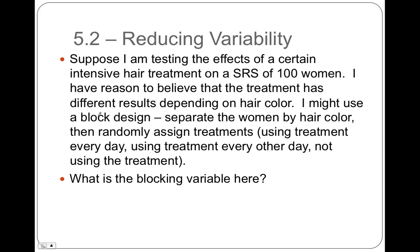Suppose we're testing the effects of a certain intensive hair treatment on a simple random sample of 100 women, and we have reason to believe the treatment has different results depending on hair color. So we use a block design: separate the women by hair color, then randomly assign the treatments within each hair color. For blonde hair, split into three groups — treatment every day, every other day, or not at all — and do the same with brunettes, redheads, and women with black hair.